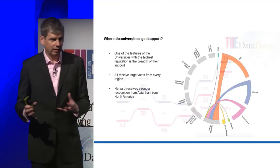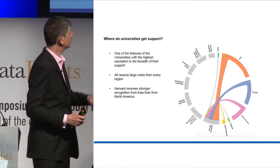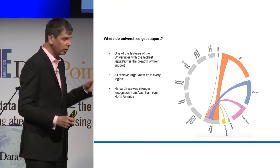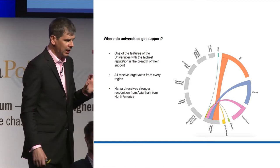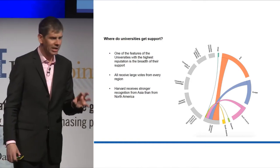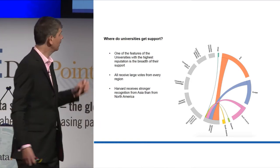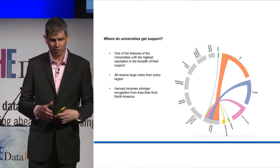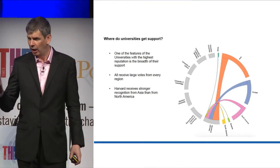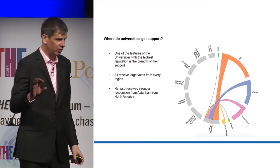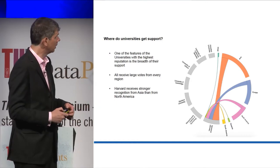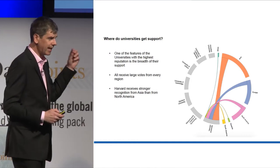When we explore where votes come from, we see some very interesting things. This is looking at the top seven institutions by number of votes received across the world. One of the things we see is that the leading world institutions truly have worldwide support. Harvard gets more votes from Asia than it does from North America. Last year when we had a subsidiary question asking to name the best institution in your region, Harvard kept getting mentioned even when the region concerned was Asia, Africa, or Europe — places it doesn't actually exist.